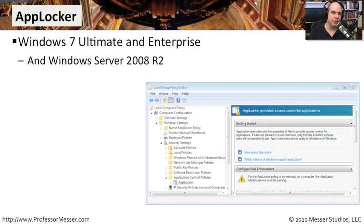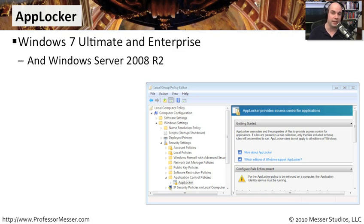AppLocker is a very new technology, so new that it's only available on Windows 7 Ultimate and Windows 7 Enterprise. It also works on Windows Server 2008 R2 as well. So if you're running Windows Vista, one of those other versions of Windows 7, or Windows XP, this AppLocker functionality won't work for you. You may want to consider running the software restriction policies instead.